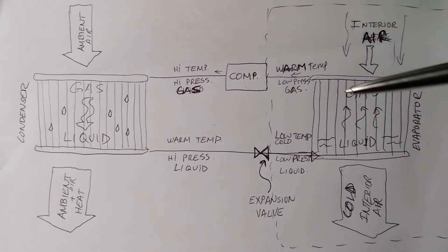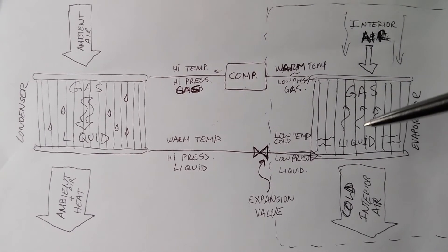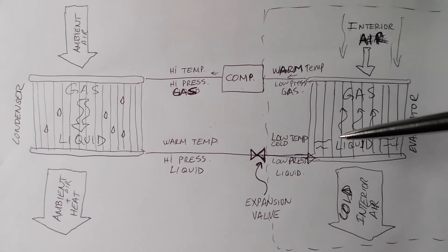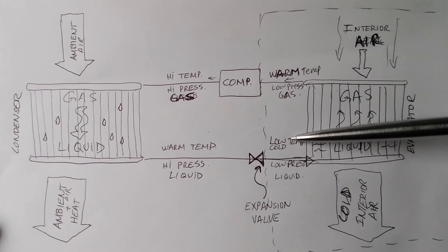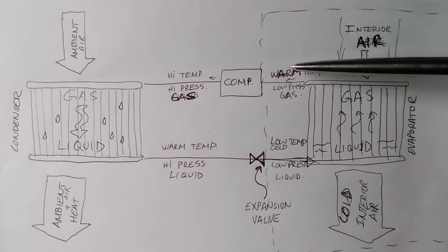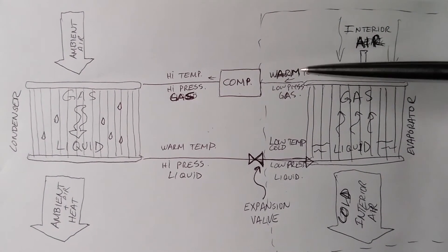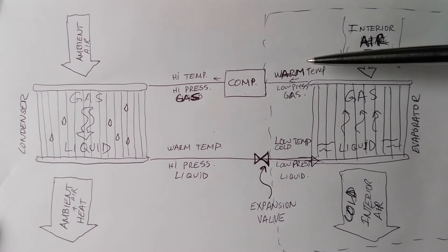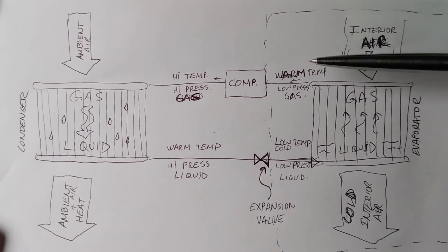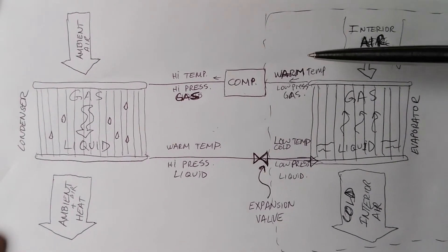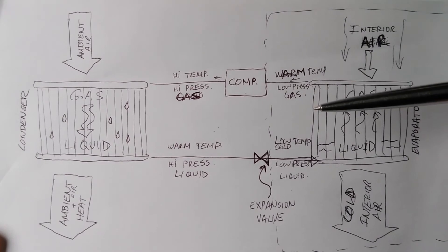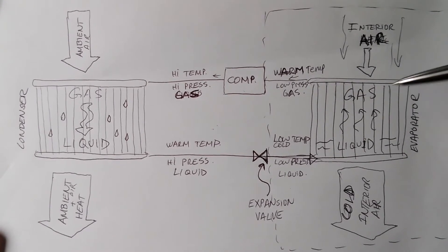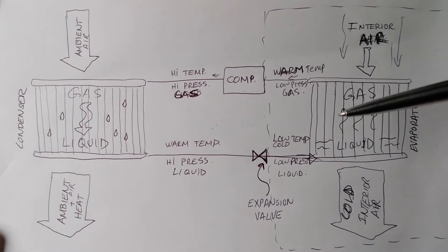The same principle works the other way — from liquid to gas. Put a pot of water on a stove, add heat, and the temperature rises until it reaches boiling point: 100°C or 212°F. You can keep pumping heat in and the temperature will not rise at all — it stays at boiling point. The water keeps changing phase from liquid to gas but the temperature remains constant, even as you keep adding heat.